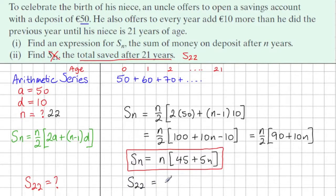So we're subbing in 22 for N into this new formula. So it's 22 times 45 plus 5 times 22. Now if you just sub this into the calculator, you'll see that the answer we get in terms of euros is 3410.